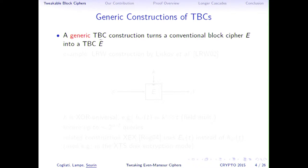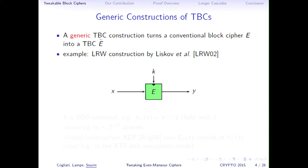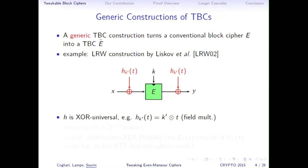Instead, cryptographers have tried to design generic tweakable block cipher constructions — a generic way to turn any conventional block cipher into a tweakable block cipher in a black-box fashion. The main construction of this type is called the LRW construction, proposed by Liskov, Rivest, and Wagner. You start from a classical block cipher and do pre- and post-tweak-dependent whitening: you hash your tweak with an XOR-universal hash function and mask your input and output with it. A classical example of an XOR-universal hash function is field multiplication, which is what I'll use in the rest of the talk.